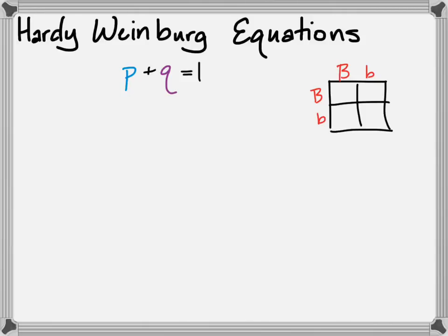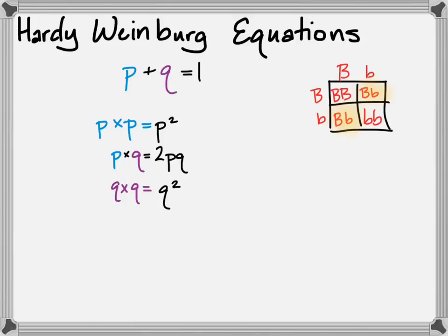Think about the heterozygous cross — the cross of two heterozygous parents. The probability of inheriting two dominant B alleles was 25%. That's the odds of getting a dominant B allele from each parent, so that's the frequency of the dominant allele times itself: P times P, or P squared. The odds of getting a heterozygous combination — one dominant B and one recessive b — is P times Q, but because that happens two times in a monohybrid cross, it's actually 2PQ. For the homozygous recessive, it's Q squared.